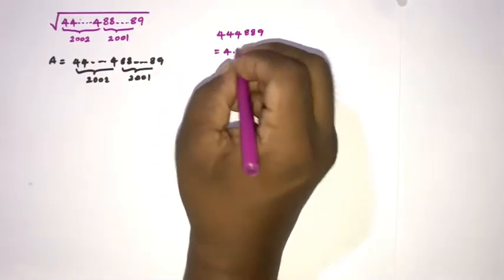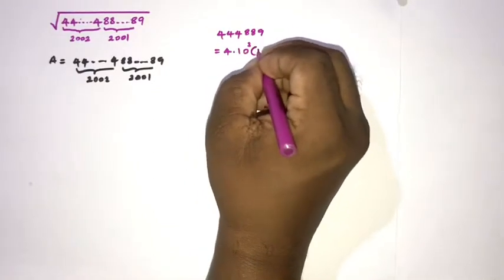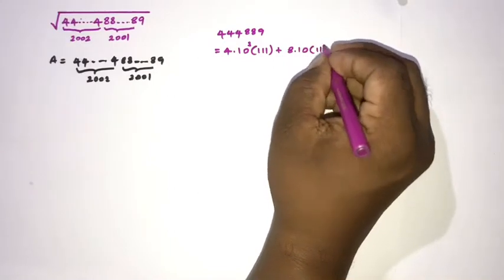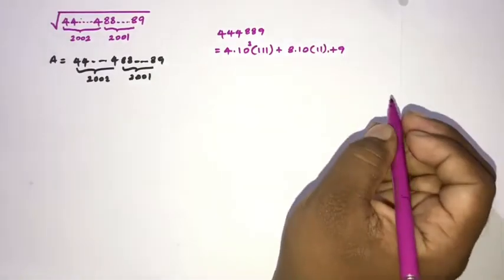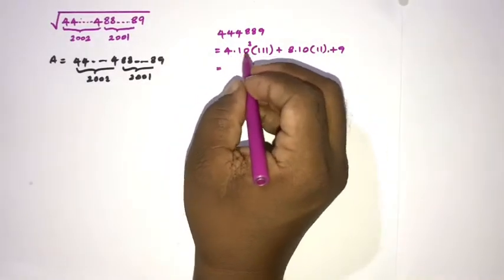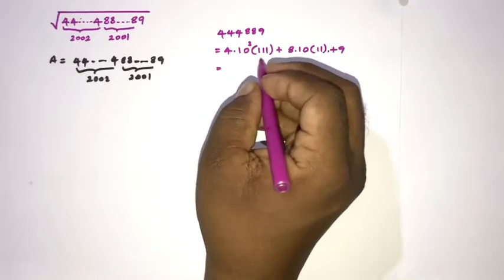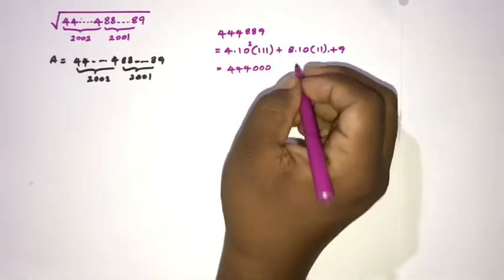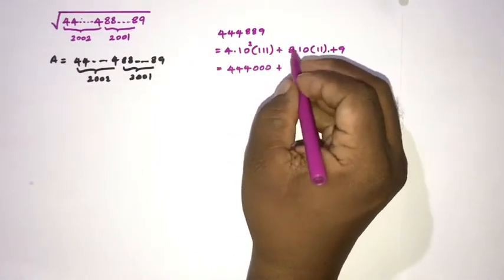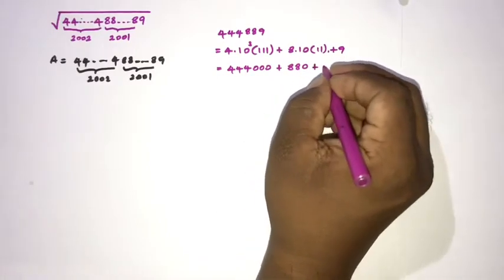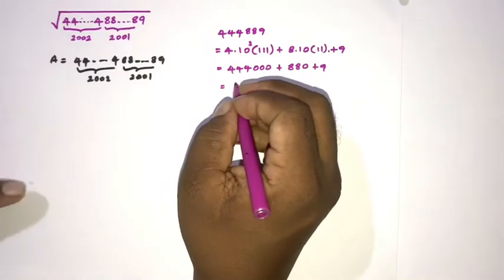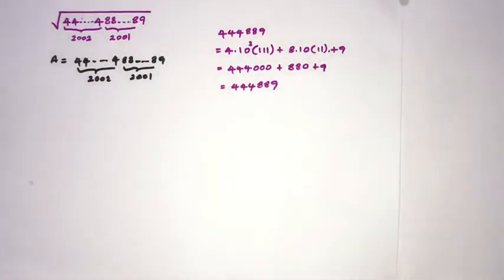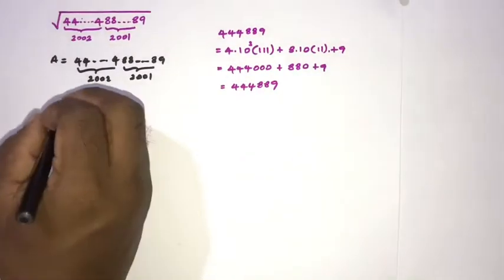We can write the example number as 4 times 10³ times 111, plus 8 times 10 times 11, plus 9. If we simplify: 4 times 111 is 444, so we get 444000; then 8 times 11 is 88, so 880; plus 9. Adding these gives us the number 4 repeated 3 times, 8 repeated 2 times, then 9.